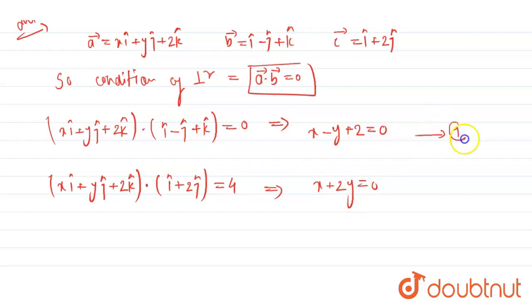So our equation 1 is x minus y plus 2 equals 0, and equation 2 is x plus 2y equals 4. So now we will solve these equations. Here we will get x and y values.